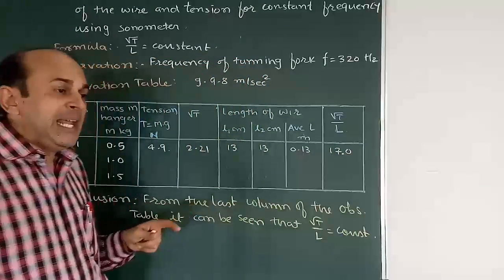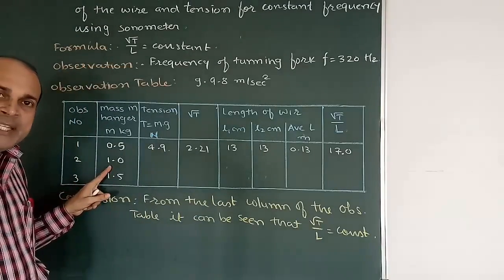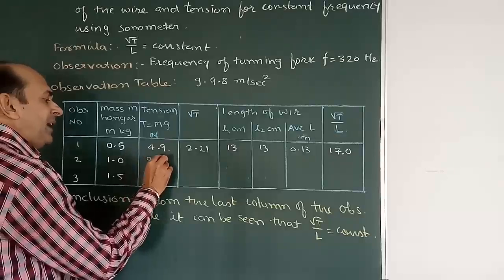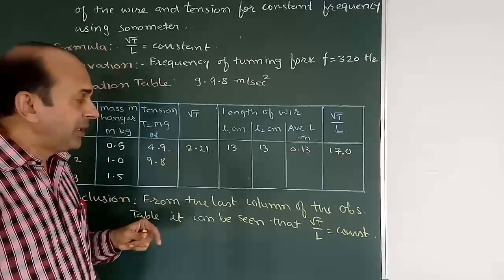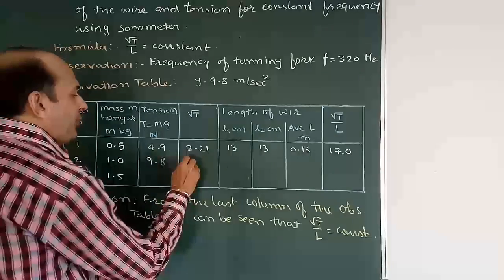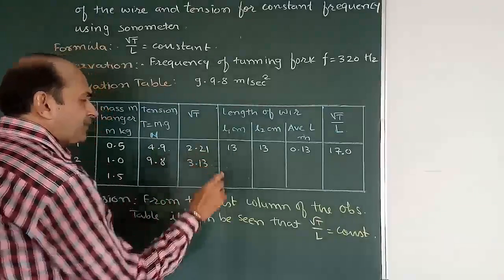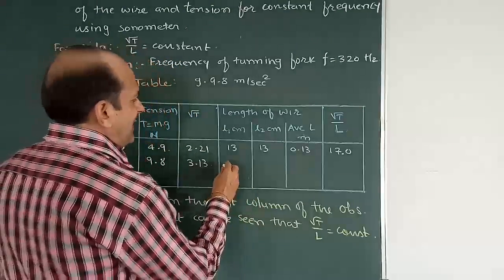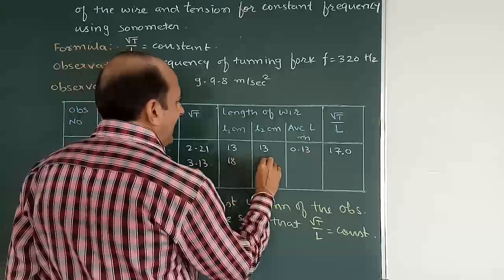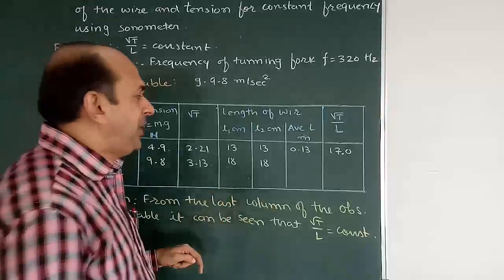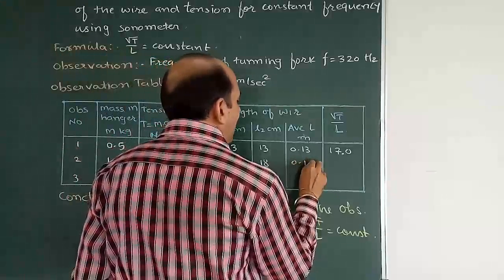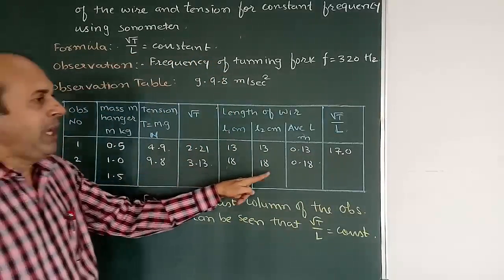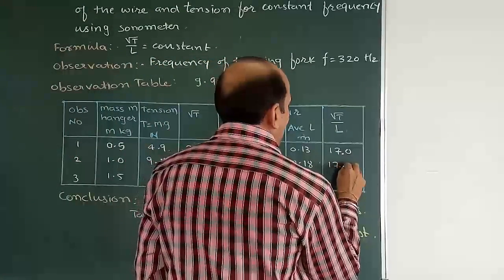For 1 kg: 1 × 9.8 = 9.8 N tension produced in the wire, and its square root is 3.13. The distance between supports was 18 cm, that is 0.18 m. The ratio √T / L = 3.13 / 0.18 = 17.4. For 1.5 kg: 1.5 × 9.8 = 14.7 N, its square root is 3.83. The distance was 22 cm, that is 0.22 m. The ratio √T / L = 3.83 / 0.22 = 17.4.